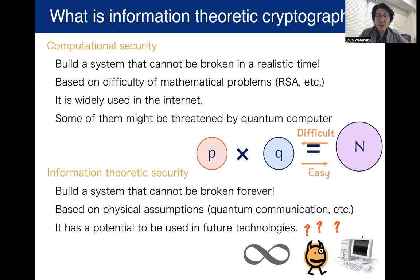For instance, in the famous RSA cryptography, the security is based on difficulty of integer factorization. This type of technology is widely used in the internet, but some of them might be threatened by the invention of quantum computers.